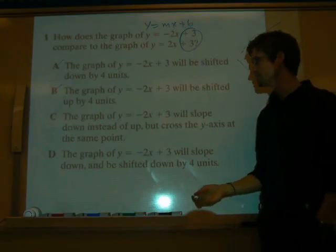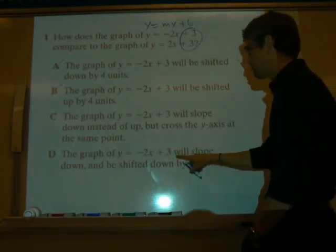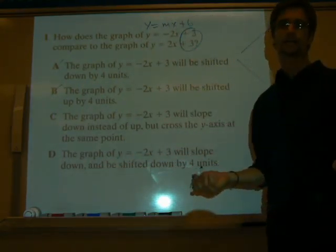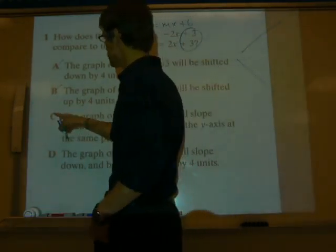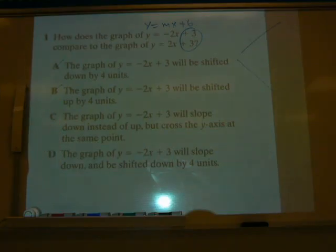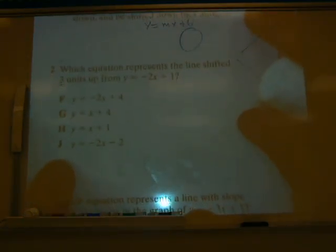Let's make sure D doesn't make sense, though. Negative 2x will slope down, yes, and be shifted down by 4 units. No, because it's not shifted. So therefore, our answer is that's going to be C. So let's go through these last ones really quick. Hopefully, y'all can pretty much do this without my help at this point. This is just kind of review.